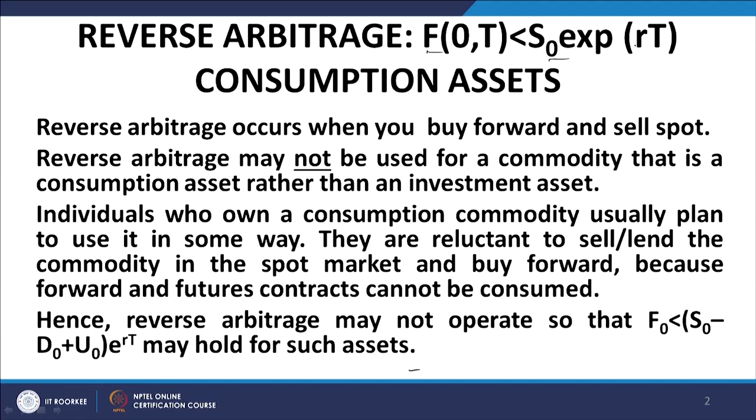The process of reverse arbitrage, which can operate without any inhibition or impediment in the case of investment assets, may not so operate in the case of consumption assets. People may not be willing to part with the physical possession of such assets because they want to use it during the period of the forward contract, and parting with these assets will obviously be detrimental to their regular business operations. As a result, this reverse arbitrage phenomenon may not occur in many instances.